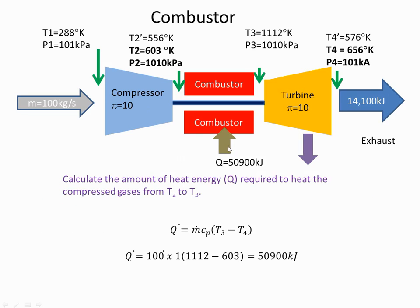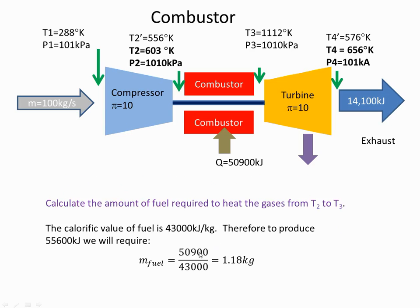I can work out the heat energy required to heat the gas from 603 degrees Kelvin to 1112 degrees Kelvin, and when I do that I get 50,900 kilojoules of energy. If the heating value of the fuel is 43,000 kJ/kg and we need 50,900 kilojoules, that means the mass of fuel required is 1.18 kg.